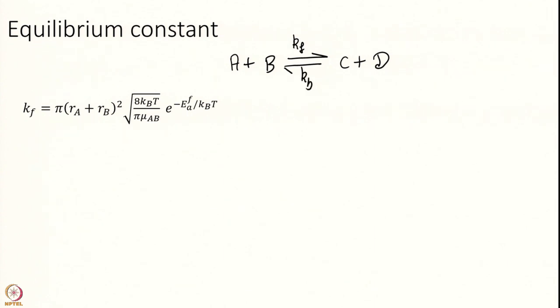I can calculate both forward rate and backward rate using collision theory. I have assumed bimolecular on both sides. If that is the case, my forward rate is given by this equation that we have derived and used multiple times in the last several modules.